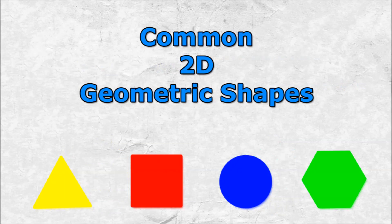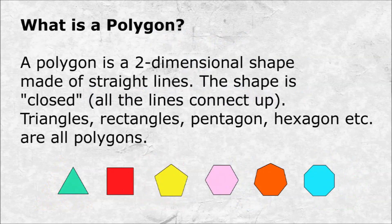Common two-dimensional geometric shapes. Let's start with the word polygon. A polygon is a two-dimensional shape made of straight lines, and the shape is closed — all the lines connect up. Triangles, rectangles, pentagon, hexagon, and so on are all polygons.